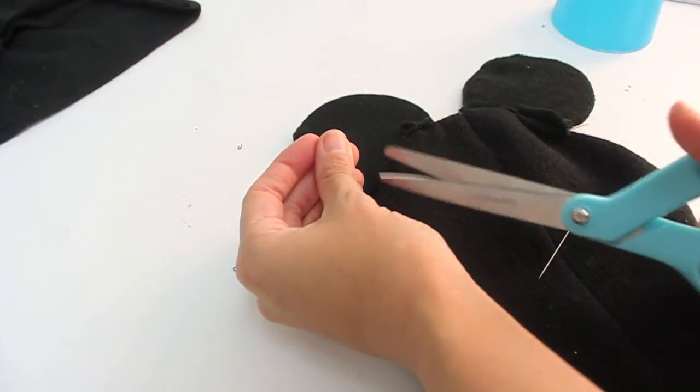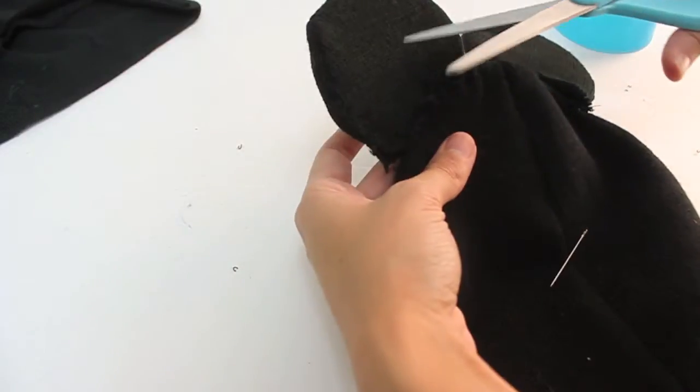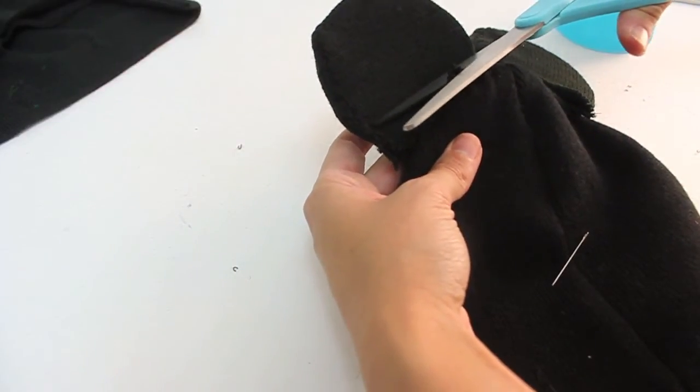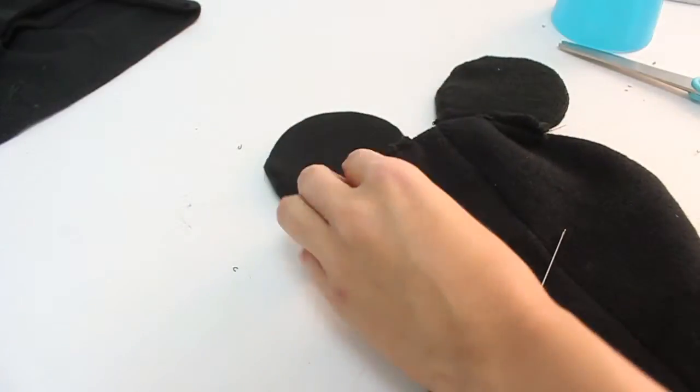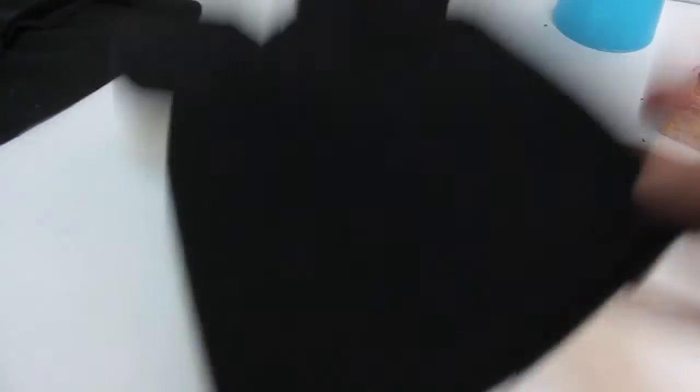Go ahead and do this to both sides. And once that's done, trim off any extra fabric that lays on the bottom of the ears. And you're completely all done with your Mickey Mouse ears beanie.